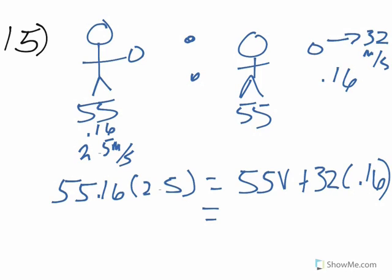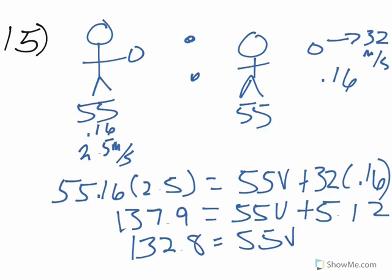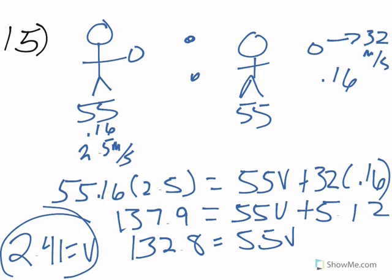Plugging in numbers: total momentum before is 55.16 times 2.5, which equals 137.9. Then 55V plus 5.12 (which is 0.16 times 32) gives 137.9 equals 55V plus 5.12, so 132.8 equals 55V. Dividing by 55 gives V equals 2.41 meters per second. So when she moves forward and throws the snowball, she actually loses a little speed.